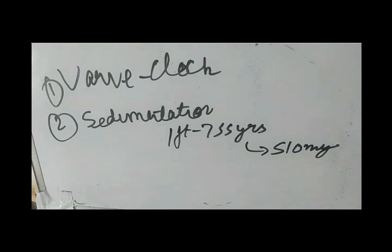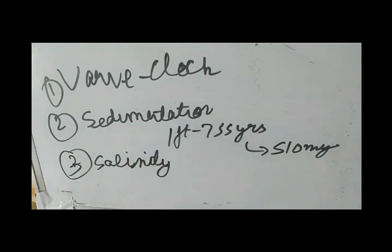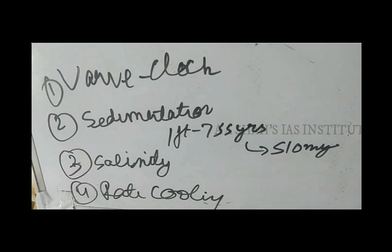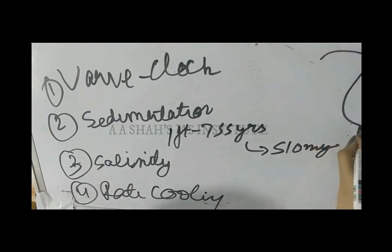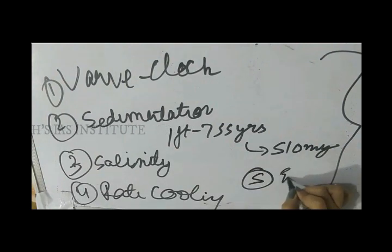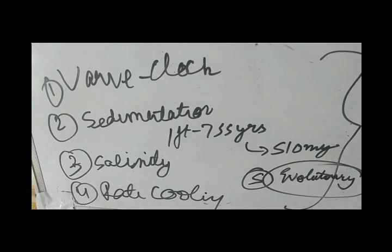Next, you have the salinity clock. You see how much salt is added per annum to the sea and then check the present salinity — that tells you in how many years that much salt has deposited. Then there is the rate of cooling of the earth: you see the present temperature, know the previous temperature, and calculate how much temperature drops per annum. Another, even more vague method is the evolutionary method — you see how many years it takes for new species to form and use that to indirectly calculate the age of the earth.